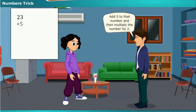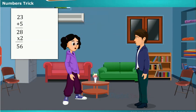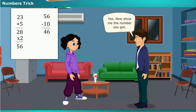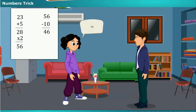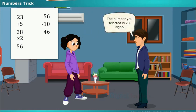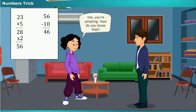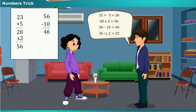Okay, tell me. Take any two-digit number but don't tell me. Okay. Add five to that number, then multiply the number by two. Okay. Now subtract 10 from that number. Okay, yes. Now show me the number you got. 46. The number you selected is 23, right?